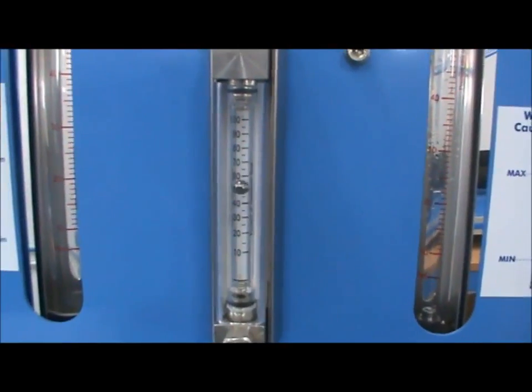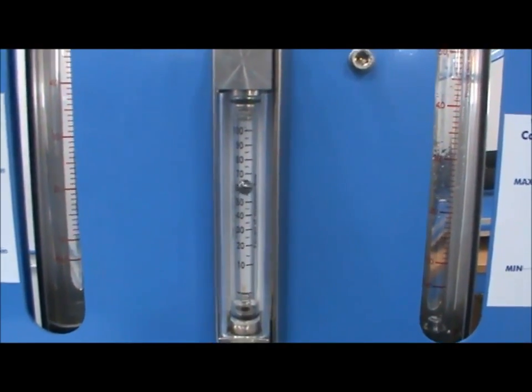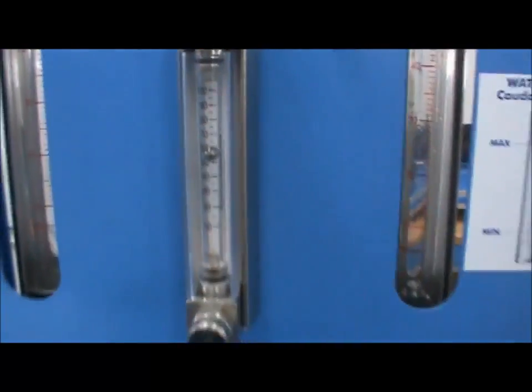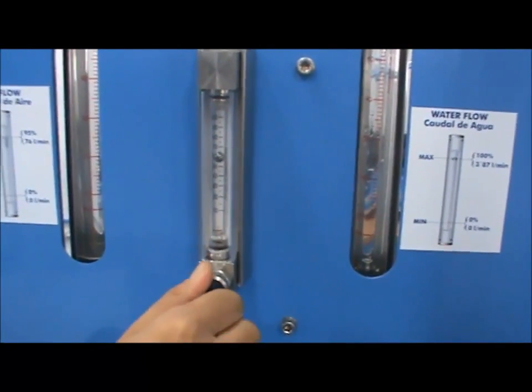Next, open the CO2 tank providing one bar of pressure to the unit, and adjust the flow as needed. In this experiment, we will use 40%.